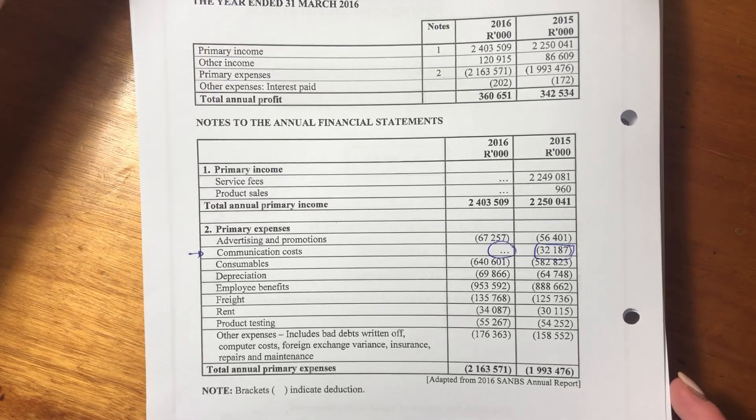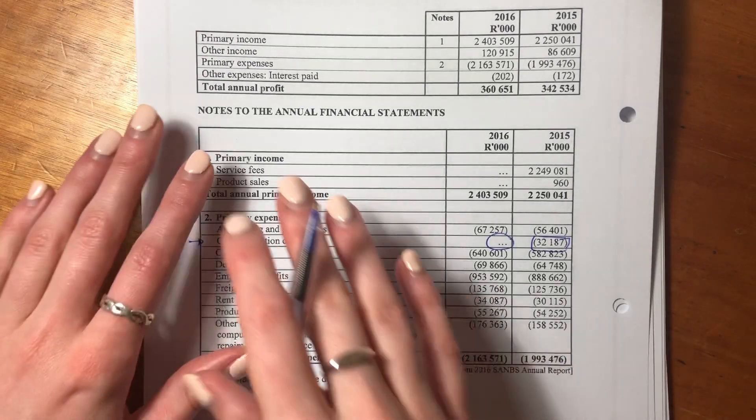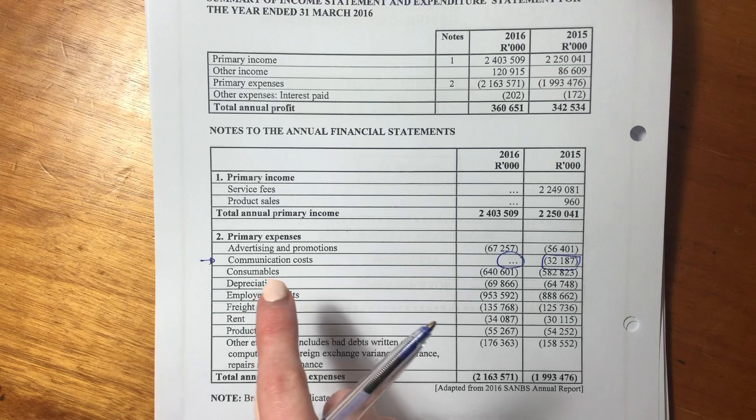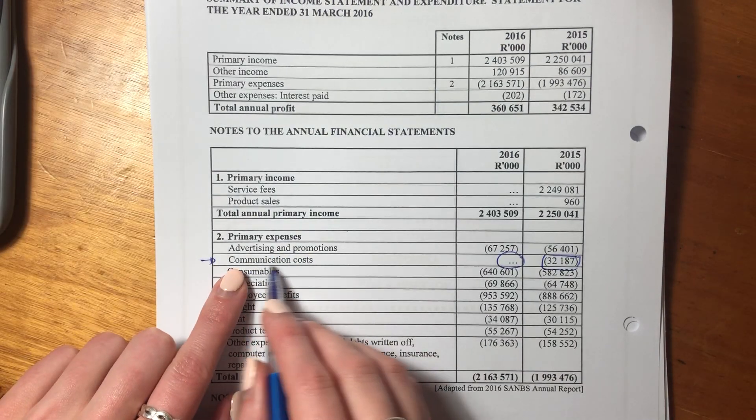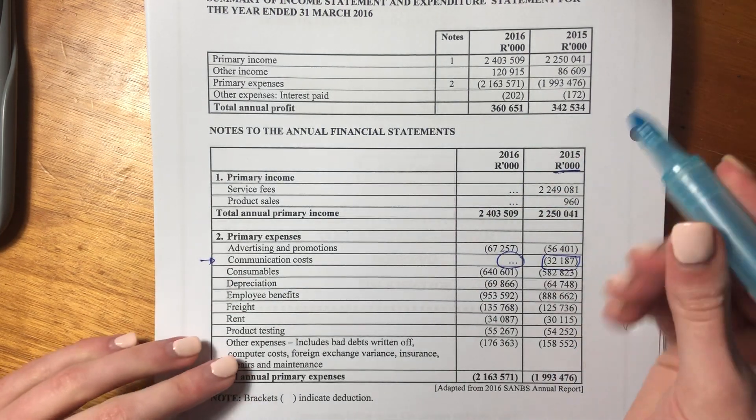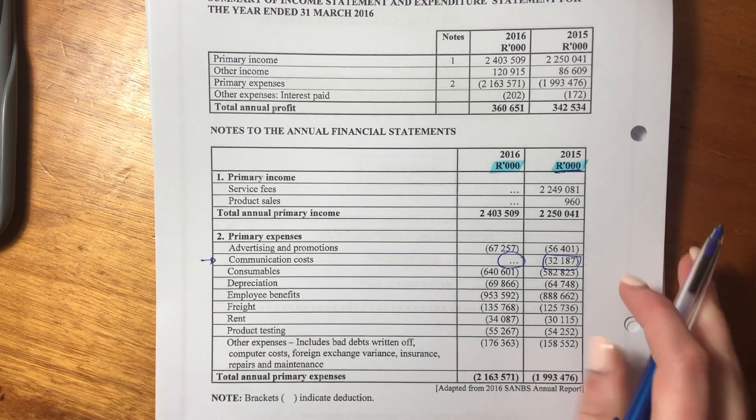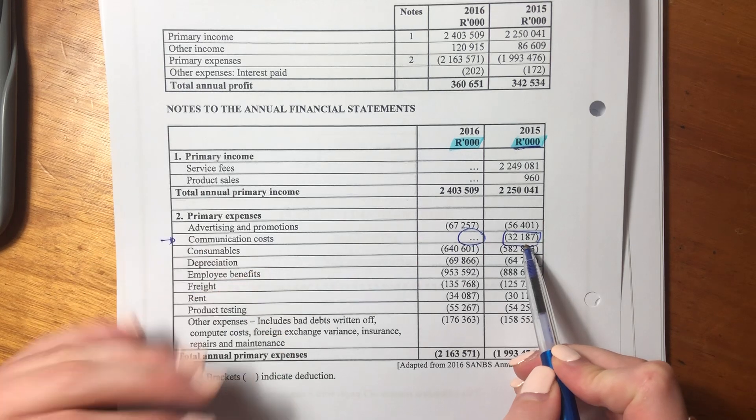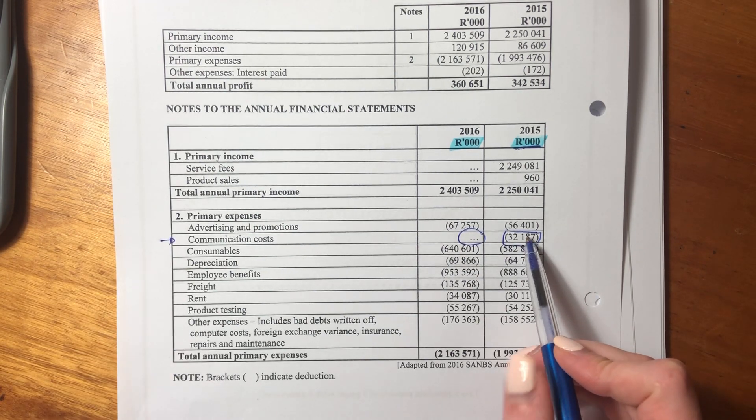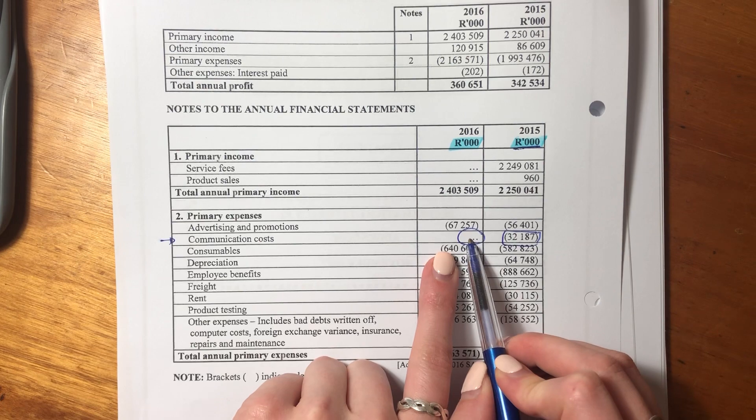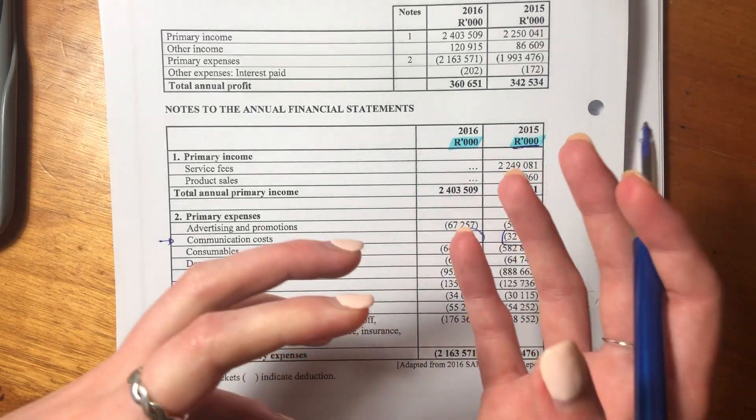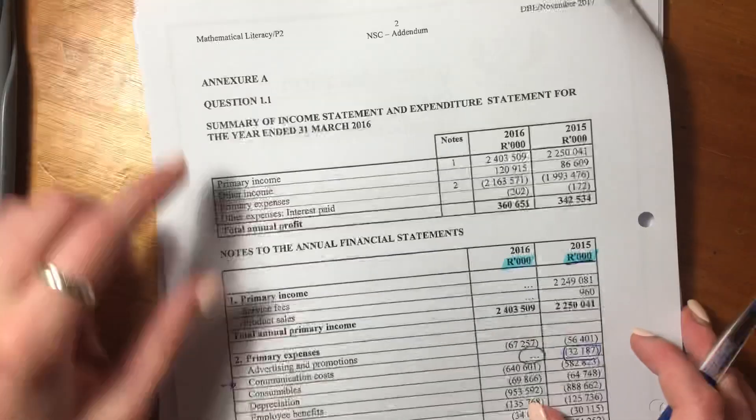So let's go to the addendum and make sure that we understand what's going on. So the addendum shows us sort of summary at the top and then more detailed at the bottom. We have primary income, we have primary expenses, and look, there's communication costs. Communication costs given in thousands. So don't forget to always look in what unit information is given. So this is actually over here, it says 32,187. That's not just 32,187, it's 32,187,000 rand. And then we don't have it for 2016. So we're going to use the 2015 number, apply that decrease, that 4.402%, to get the cost in 2016.